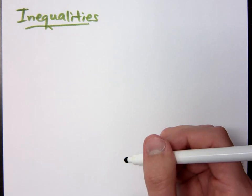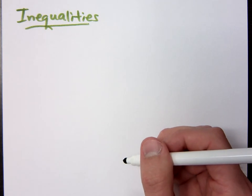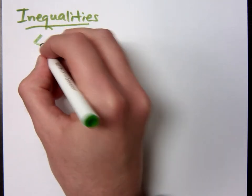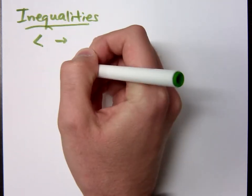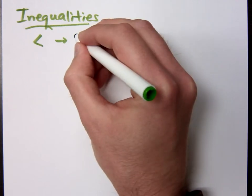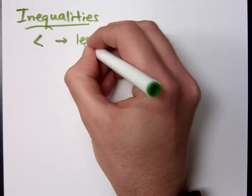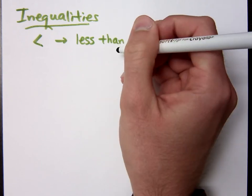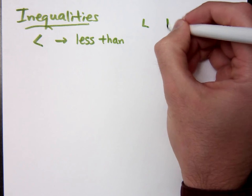What do you guys remember about inequalities? What does that symbol mean? It's less than. It kind of looks like an L, doesn't it? That's how I write my L's. I write them like this and not this.